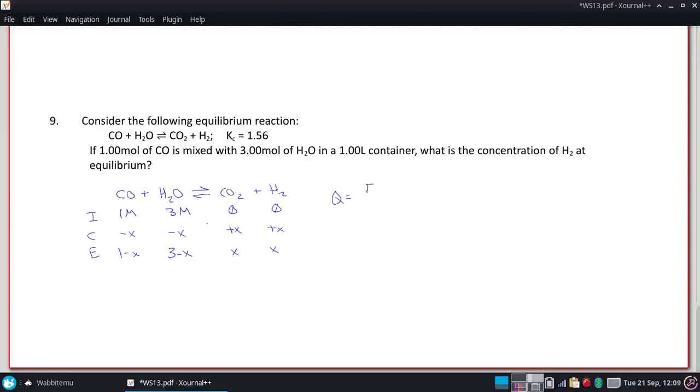And our Q is going to be that carbon dioxide and hydrogen all over carbon monoxide and water. Plugging things in, I got 1.56. I have X and X all over one minus X and three minus X.